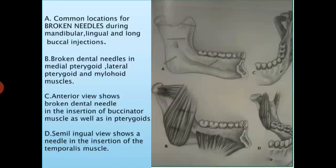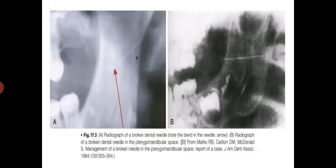In this slide we can see an image of the hub of a broken needle. Diagram A shows common locations for broken needles during mandibular, lingual, and long buccal injections. Diagram B shows a broken dental needle in the medial pterygoid, lateral pterygoid, and mylohyoid muscles. In diagram C, the anterior view shows a broken dental needle in the insertion of the buccinator muscle as well as in the pterygoids. In diagram D, the semilingual view shows a needle in the insertion of the temporalis muscle.